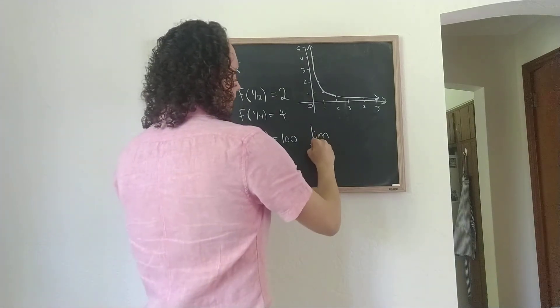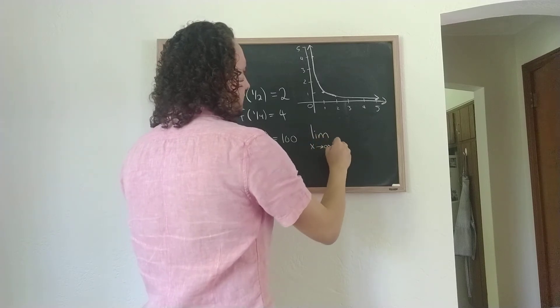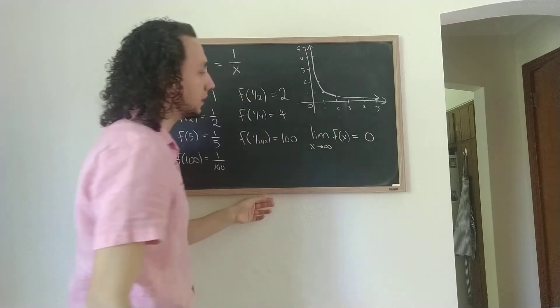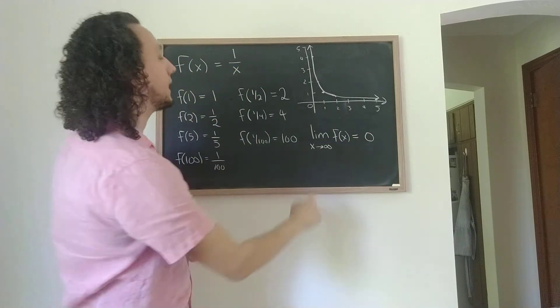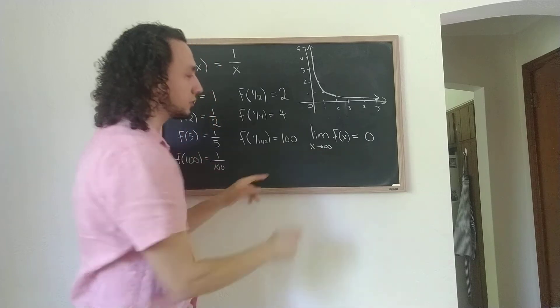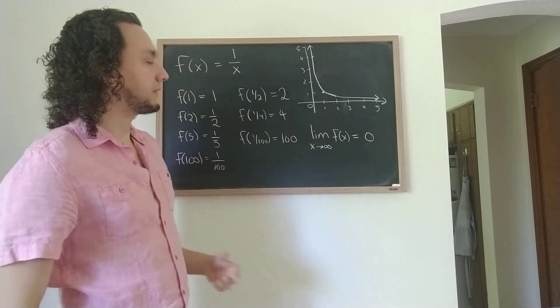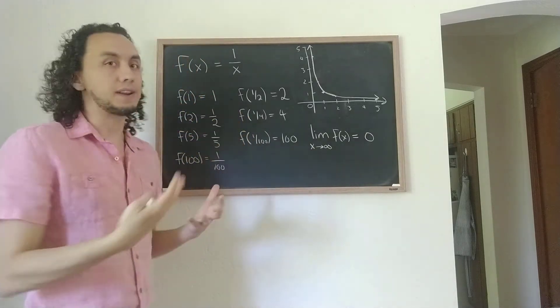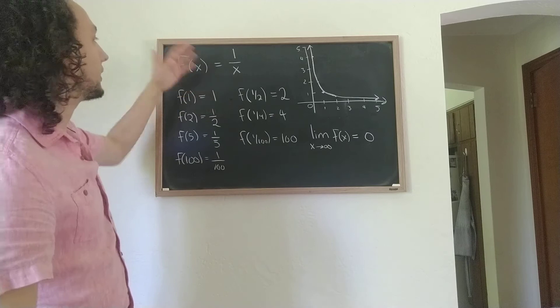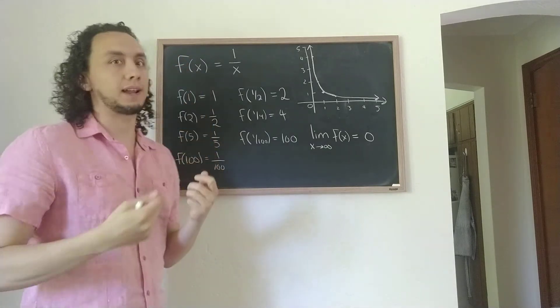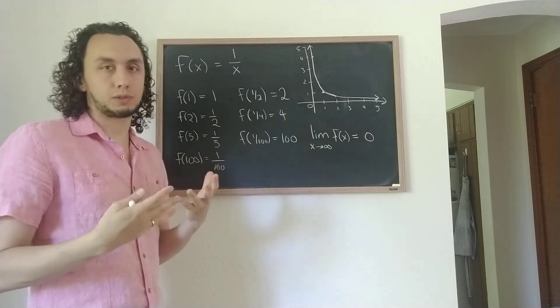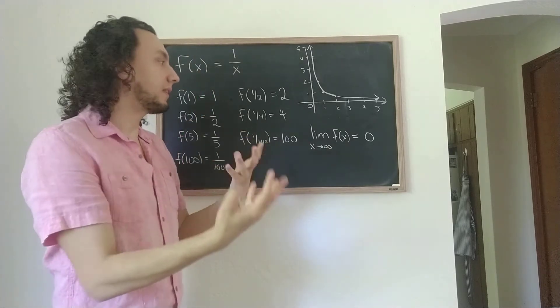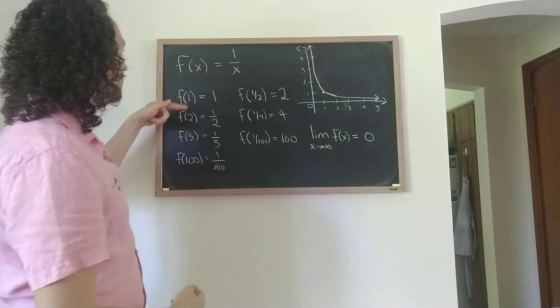is that the limit as x goes to infinity of f of x equals 0. So this just expresses the idea that, as I put larger and larger numbers in, so this x goes to infinity, that's saying, think of putting larger and larger numbers in. I can't actually put infinity in, because at least in this framework, infinity isn't a number. This function isn't defined as something called infinity. It's just sort of a concept for now. But we can sort of implement that concept by thinking of just larger and larger numbers.